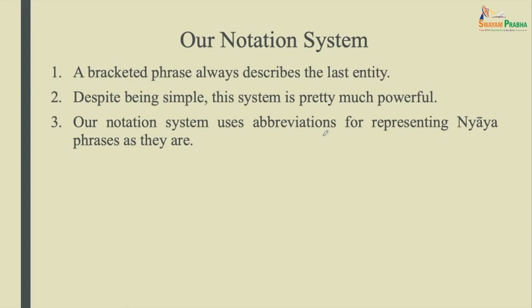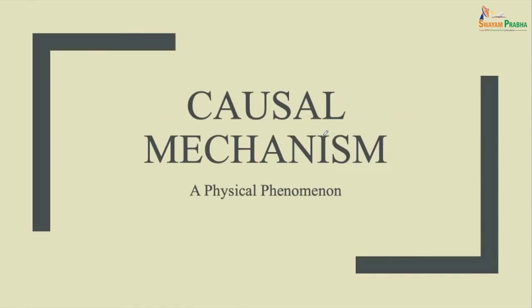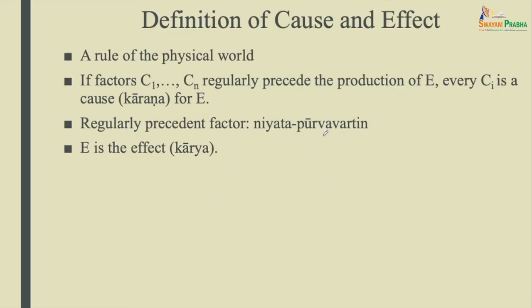Now we go to the next topic: causal mechanism. Why do we need this? Because an epistemic process is a kind of causal process. There is also a very predominant causal tendency in Indian philosophy — everything is defined in terms of cause and effect relations. So we need to understand the theory of causation. First, we define a cause and an effect. It is an ontological law — a law of the physical world that applies to non-cognitive objects. Cause is karana and effect is karya.